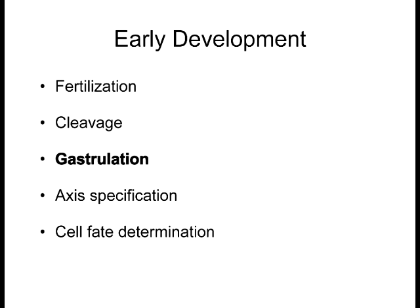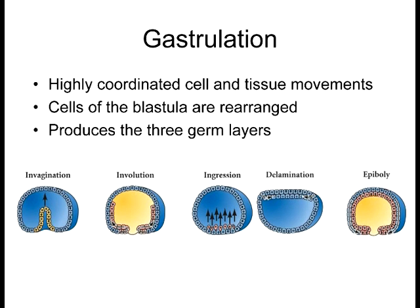Gastrulation involves movements induced by cell-cell interactions. Cadherins cause cells to attract or repel one another, causing changes in adhesion and affinity. When cells become specified to become mesoderm, they express different cadherins and no longer adhere to the ectoderm, moving away from them. This influences further interactions with other cell types. Gastrulation is really just the rearrangement of cells to form the three germ layers.